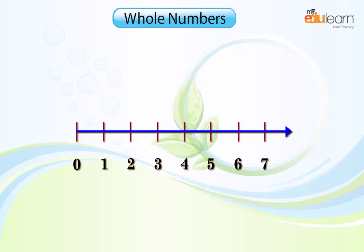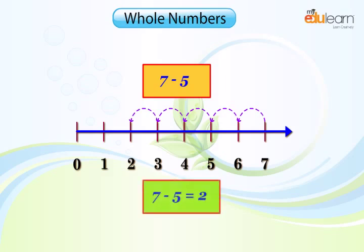The subtraction of 2 whole numbers can also be shown on the number line. Let us find 7 minus 5. Start from 7. Since 5 is being subtracted, so move towards left with one jump of one unit. Make 5 such jumps. We reach the point 2. We get 7 minus 5 is equal to 2.